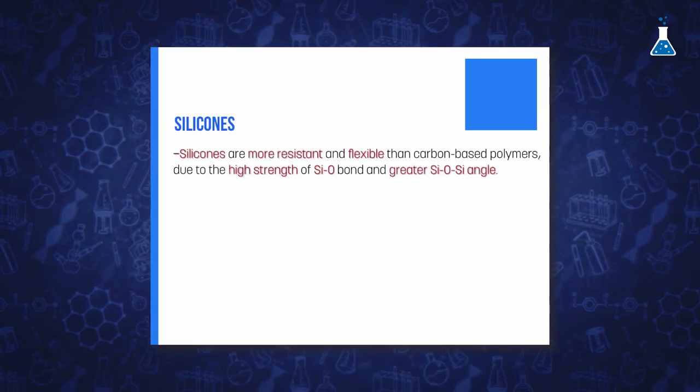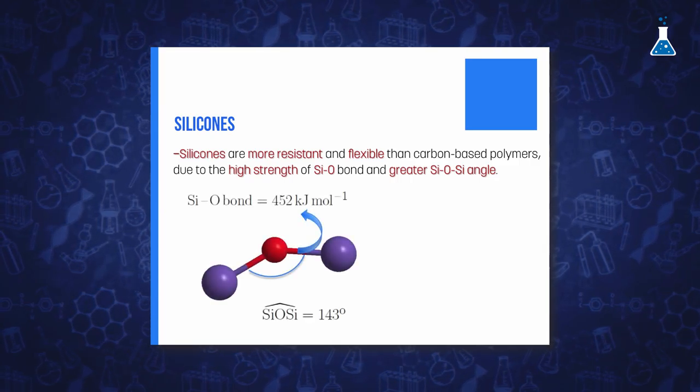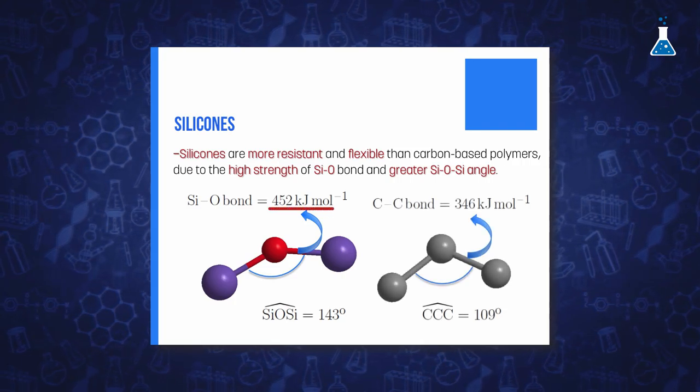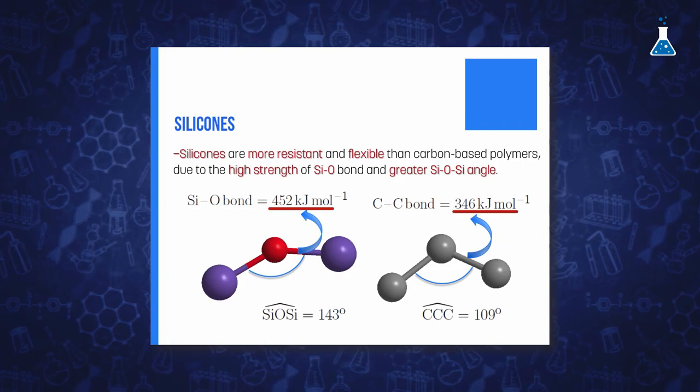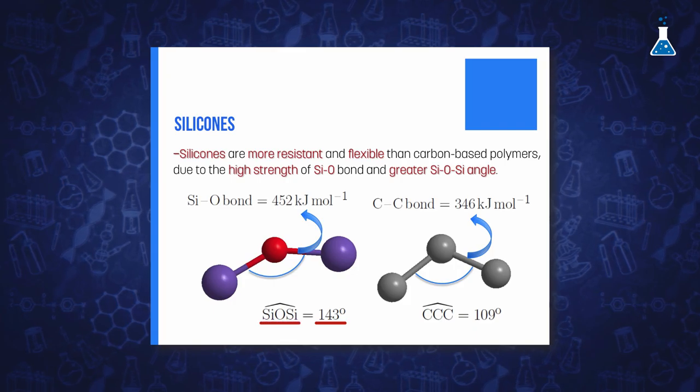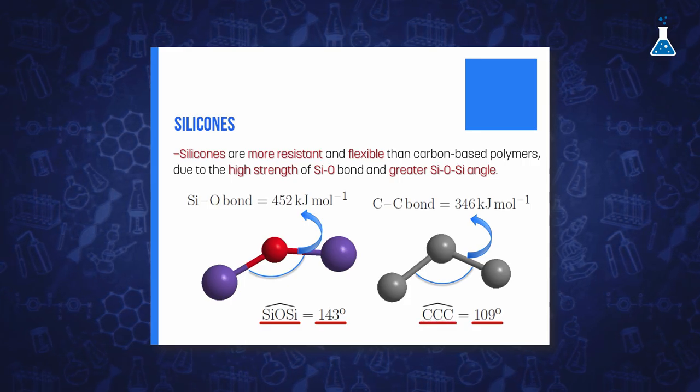In summary, the main reason for the advantages of silicone polymers over carbon-based polymers is the higher resistance to oxidation and high temperatures, given that the silicon-oxygen bond is stronger than the carbon-carbon bond, 452 kJ per mole versus 346 kJ per mole, and also the greater flexibility of silicones as a consequence of the lack of substitutions on the oxygen atoms in the chain and the wider bond angle, 143 degrees for Si-O-Si versus 109 degrees for C-C-C angle.